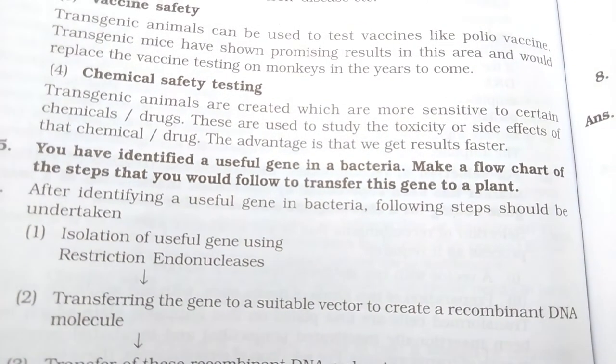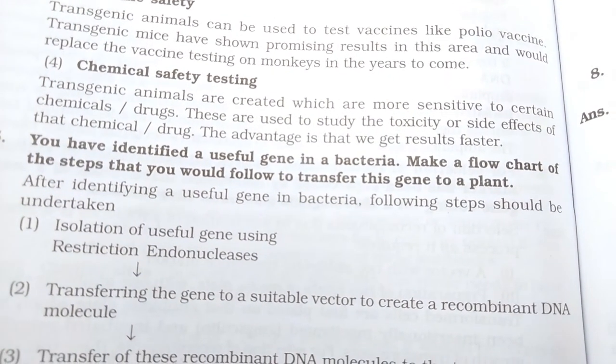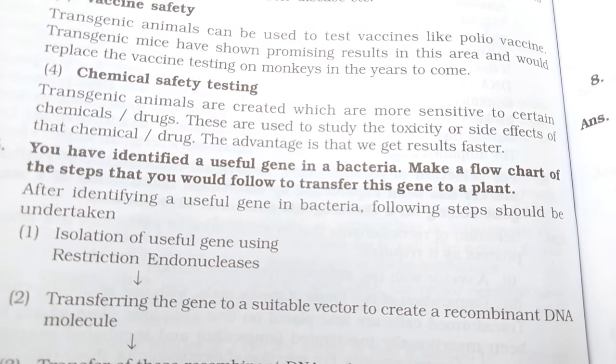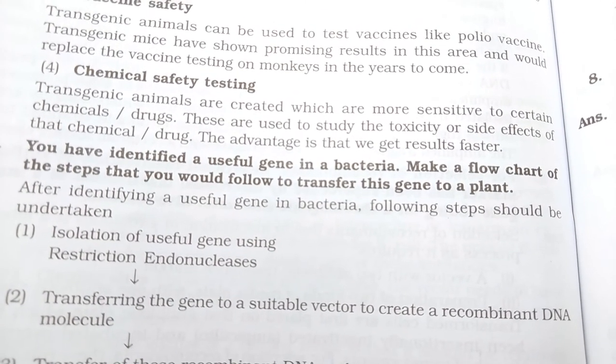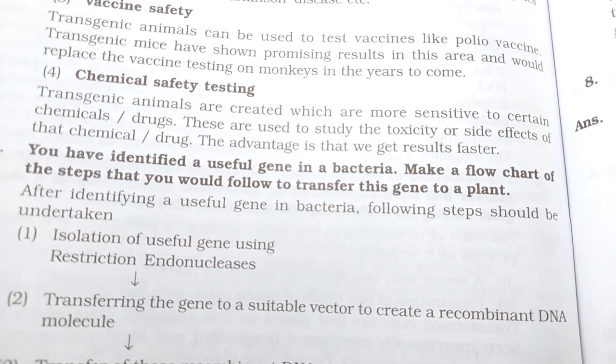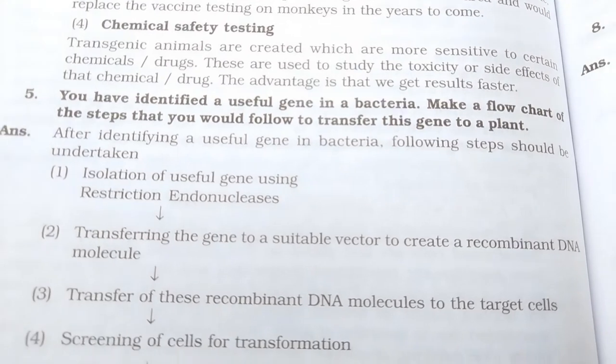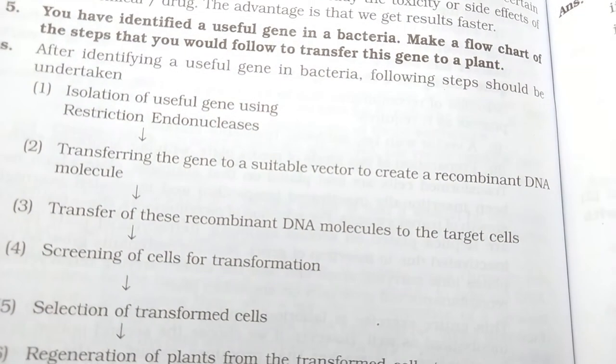You have identified a useful gene in a bacterium — make a flow chart of the steps you would follow to transfer this gene to a plant. This is the flow chart.